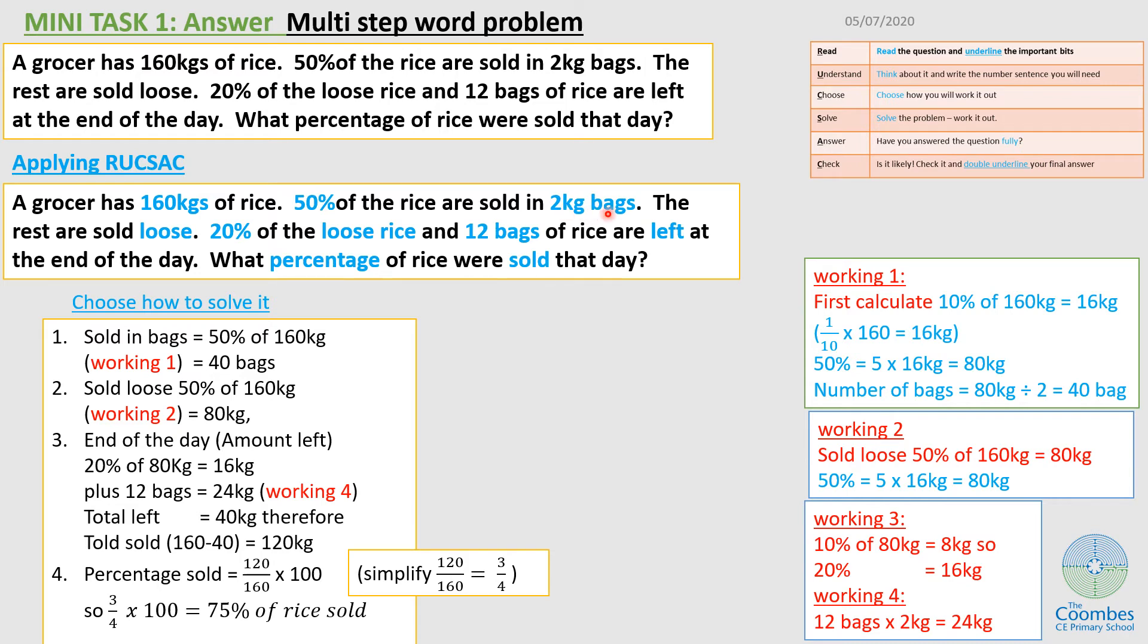Let's see how we can apply RUCKSACK to the question. First, read and underline the important bits. The 160 kg is important. Then I know that 50% are sold in 2 kg bags. The rest are loose. Then it says 20% of loose rice. Then 12 bags of rice are left. It says what percentage were sold.